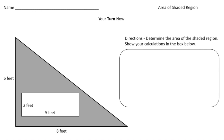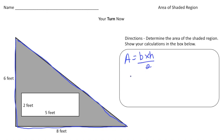Welcome back. For this practice problem, we have a big right triangle with a rectangle inside it. We need to subtract the area of the rectangle from the area of the right triangle. The area of a right triangle is base times height divided by two. Our base is 8 and our height is 6, so 8 times 6 is 48, divided by two gives us 24 square feet.